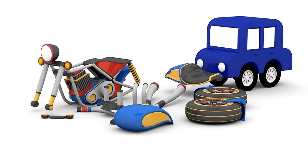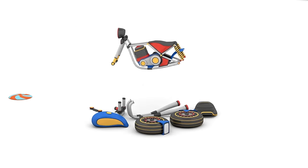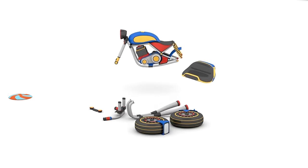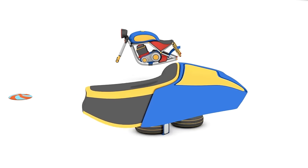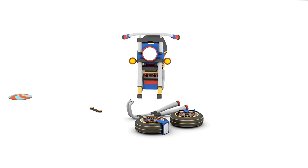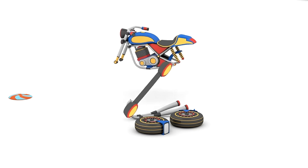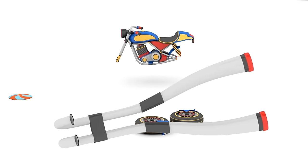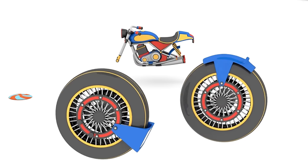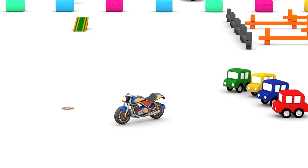It's time to assemble the motorcycle. Frame. Gas tank. Seat. Handlebars. Headlights. Exhaust pipes. Wheels. The motorcycle is ready. It drives so well.